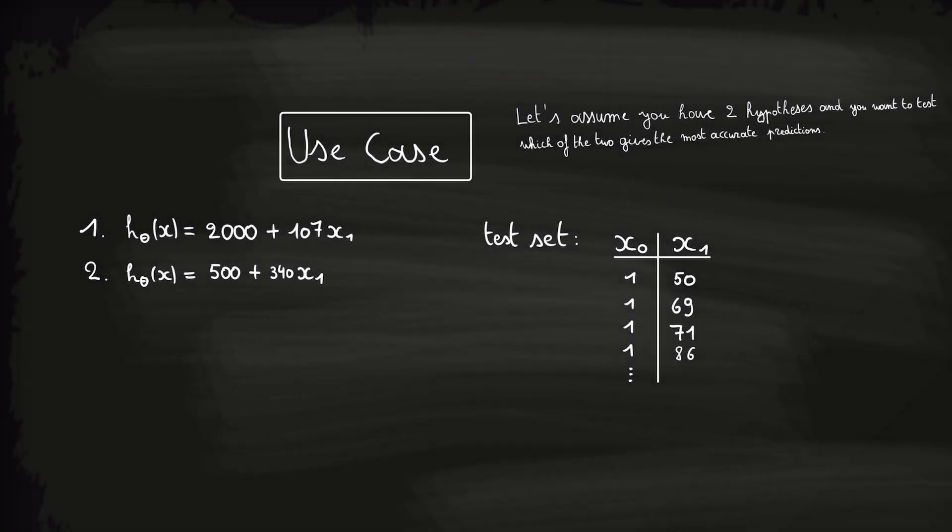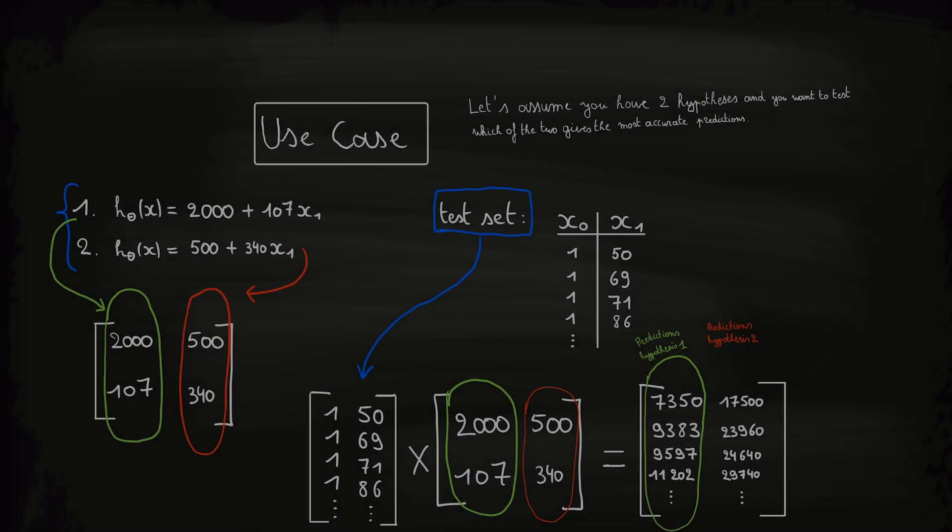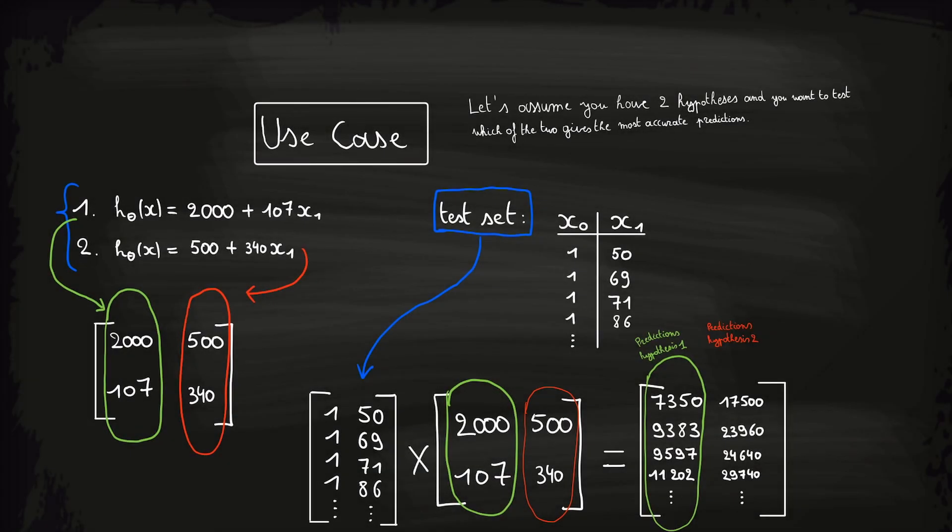Just as we did before, let's look at the practical use of matrix matrix multiplication in machine learning. Let's assume that you have two hypotheses of which you want to test which one can make the most accurate predictions. Meaning that we again have a test set like we saw in the matrix vector multiplication example. If we now not only capture the parameters theta in a vector but capture them of both hypotheses like this in a matrix, then we can do a matrix matrix multiplication which will give us another matrix that contains not only the predictions of the first hypothesis but also of the second hypothesis.